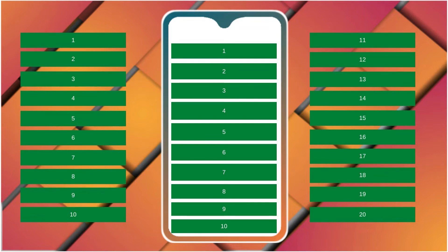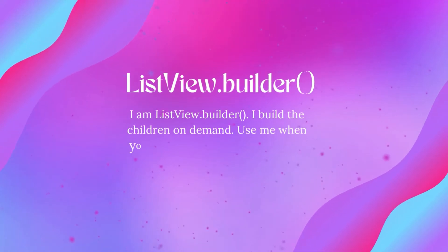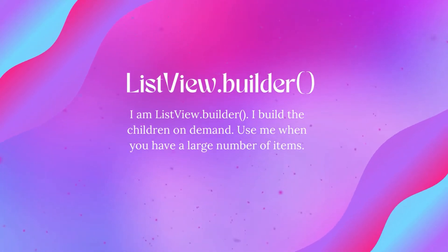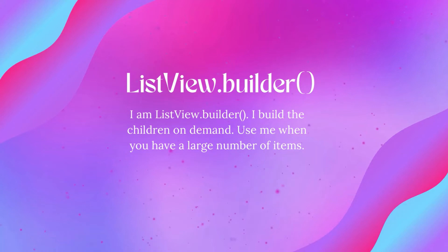But this is not the case with list view builder. When we create a list view using the list view builder, we pass two parameters to it. The first one is the item count, which is the number of items you want to display — but it is an optional parameter. And the second parameter is the item builder, which builds the children on demand. So we use the list view builder when we have a large number of children, because it builds only those children that are visible on the screen.